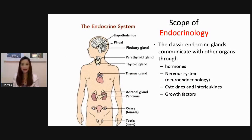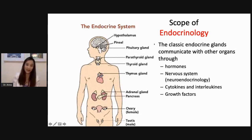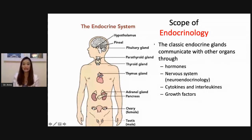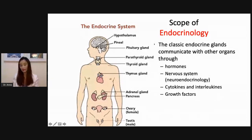The scope of endocrinology classically involves the classic endocrine glands: the hypothalamus, pineal gland, pituitary, parathyroid gland, thyroid gland, thymus, adrenal glands, pancreas, and the gonads — your ovaries and testes. These classic endocrine organs communicate with other organs through hormones, the nervous system via neuroendocrinology, and even through cytokines, interleukins, and growth factors.